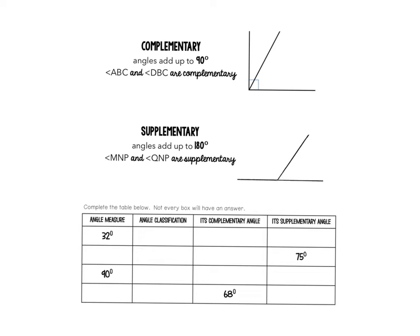We're going to start by looking at complementary and supplementary angles, and these are your notes for both component 1 and component 2. Complementary angles are angles that add up to 90 degrees, meaning that they create a right angle, and supplementary angles are angles that add up to 180 degrees, meaning that they form a straight line.